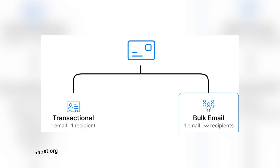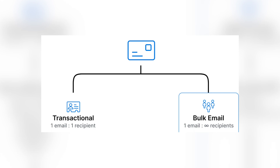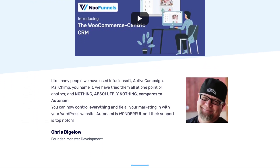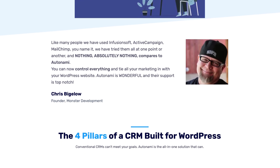This could come in the form of transactional email, which is one-to-one — someone requests something like a password reset or a receipt and your website sends it to them — or it could also come in the form of bulk email, where you write a newsletter from your website using a plugin like AutoNami or Fluent CRM.